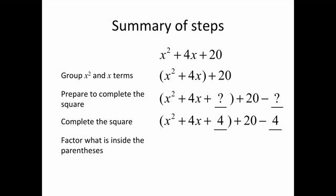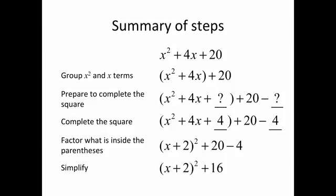We now factor what's inside the parentheses, and that's always going to be a perfect square because we made it that way. So this is now x plus 2 squared, plus 20 minus 4. Then we simplify what's outside, and we have our final form: x plus 2 squared plus 16.